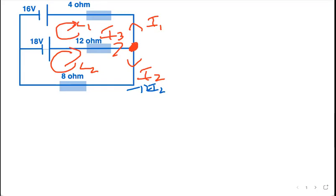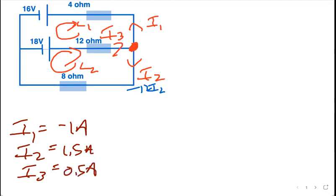So what do we have? We have i1 equaled negative 1 amp, we had i2 equaled 1.5 amps, and we have i3 equals 0.5 amps. Now let's check.